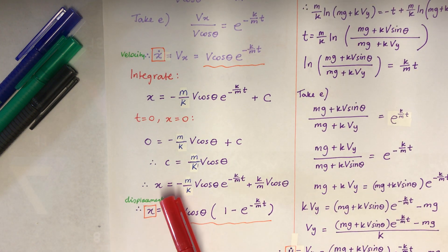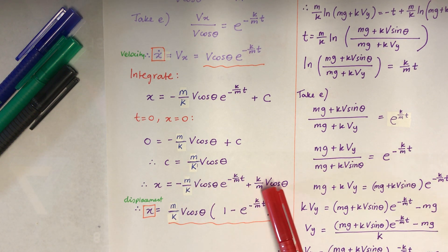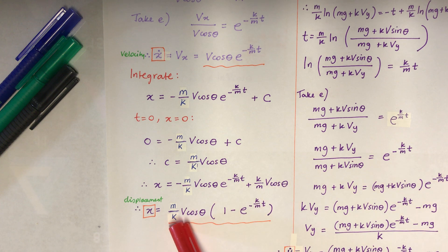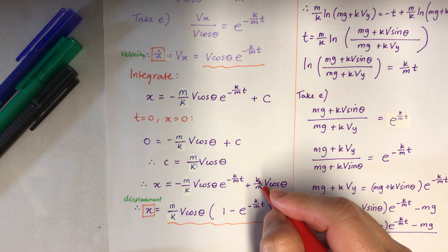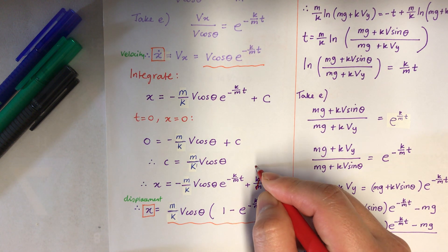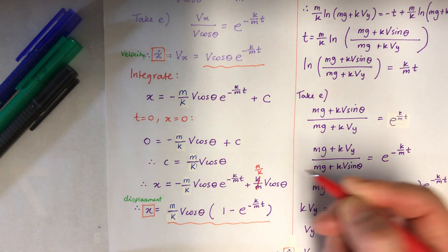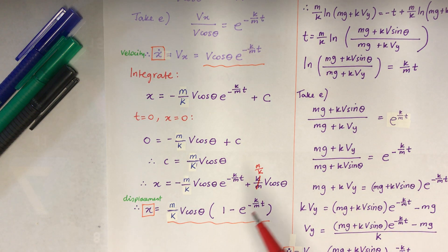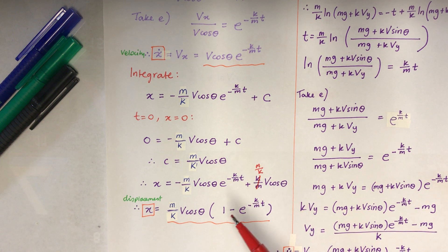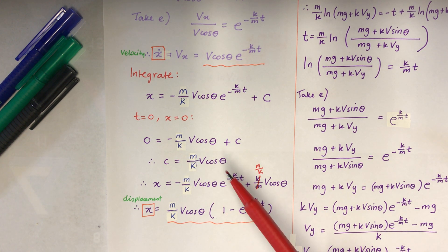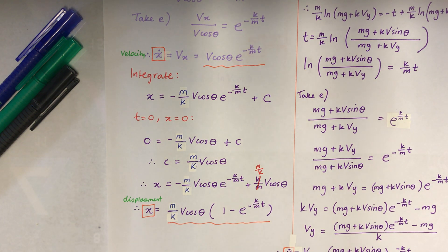Then I integrate to get the displacement. x equals — all I have to do is integrate that exponential part and divide by the power, which becomes minus m over k, not k over m, because we flip it. And v cos theta goes to the other side as positive. Taking the common factor m over k out, the whole horizontal displacement is: x equals m over k times v cos theta times (1 minus e to the power of minus k over m times t).